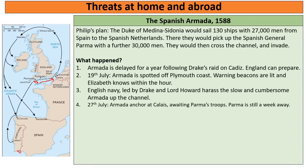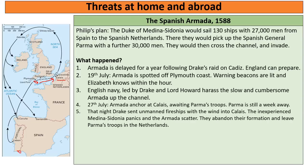On 27th July the Armada anchored at Calais to wait for Parma and the Spanish army from the Netherlands. However, Parma was a week away — he was not there ready for the Armada. The night of the 27th, Drake had a very intelligent idea. He loaded unmanned ships with combustibles, and seeing the wind blowing towards Calais, set these ships on fire. These fire ships blew towards the Spanish Armada anchored at Calais. Medina Sidonia — not an experienced naval commander — panicked, and the Spanish scattered, abandoning Calais and their formation, leaving Parma stranded in the Netherlands.